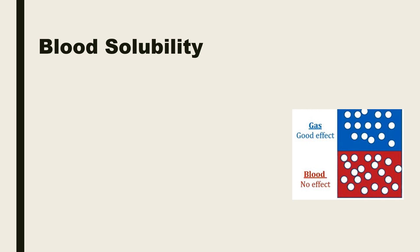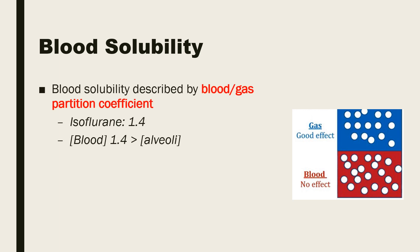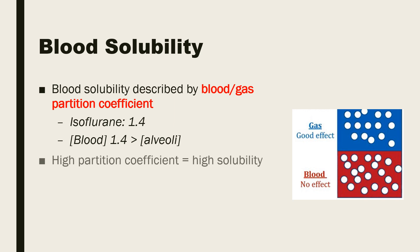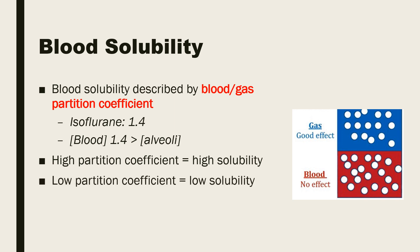The way we measure the blood solubility of a gaseous anesthetic is by determining a number called the blood-gas partition coefficient. For example, for the inhaled anesthetic isoflurane, the blood-gas partition coefficient is 1.4. This means at any point in time, there will be 1.4 molecules dissolved in blood for every one molecule that is in the gaseous form in the alveoli. Drugs with a very high coefficient have high solubility in the blood and will take longer to induce anesthesia and longer to wash out. Conversely, drugs with a low partition coefficient have low blood solubility, will more quickly induce anesthesia, and will more quickly wash out.